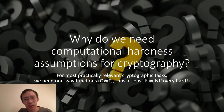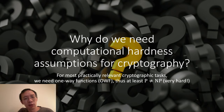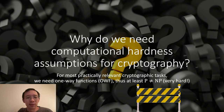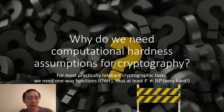It turns out that if one-way functions exist, we will be able to separate NP from P, which, as you probably know, is a very hard open question worth at least a million dollars. So there seems to be a barrier for proving that they are actually secure. Therefore, some computational hardness assumptions are needed in order to justify their security.